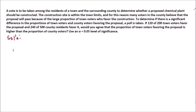First we need our null hypothesis. The null hypothesis states that there is no significant difference — the town voters and the country voters have the same level of favoring the construction of the chemical plant. So we say p₁ equals p₂, meaning the proportion of town voters equals the proportion of country voters. Next, we have our alternative hypothesis.